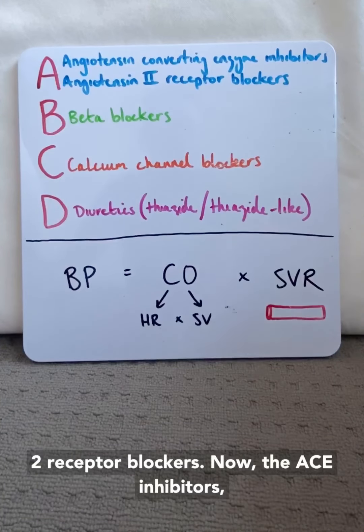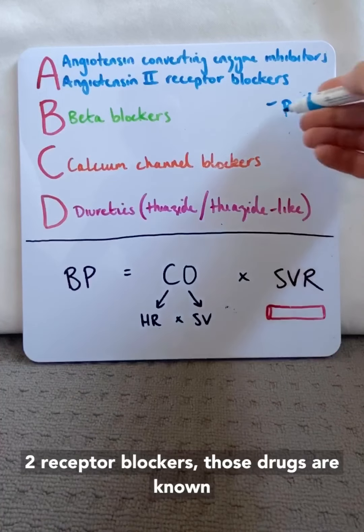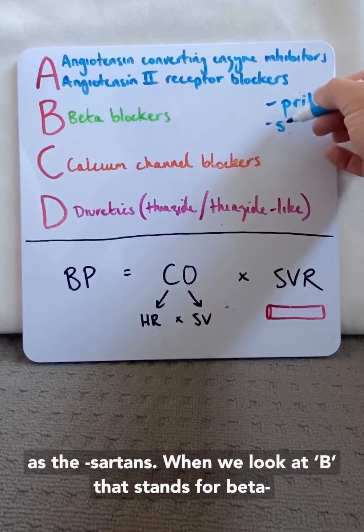Now the ACE inhibitors, those drugs are known as the PRILs. The angiotensin 2 receptor blockers, those drugs are known as the SARTANs.